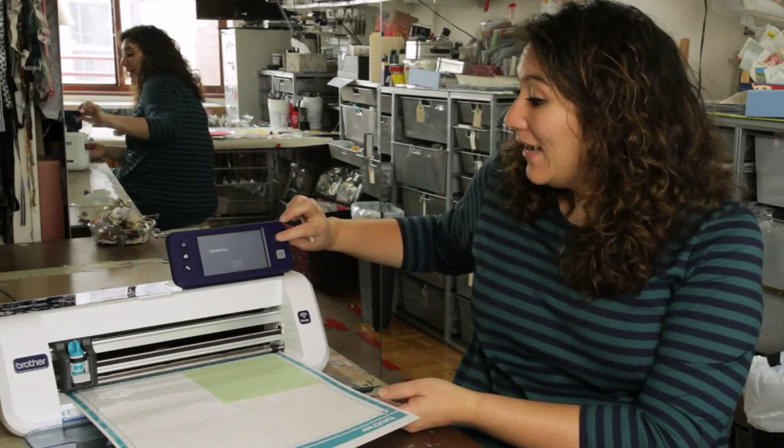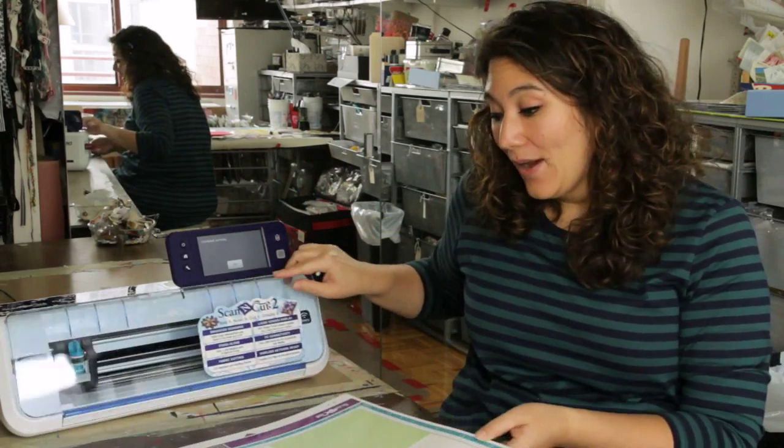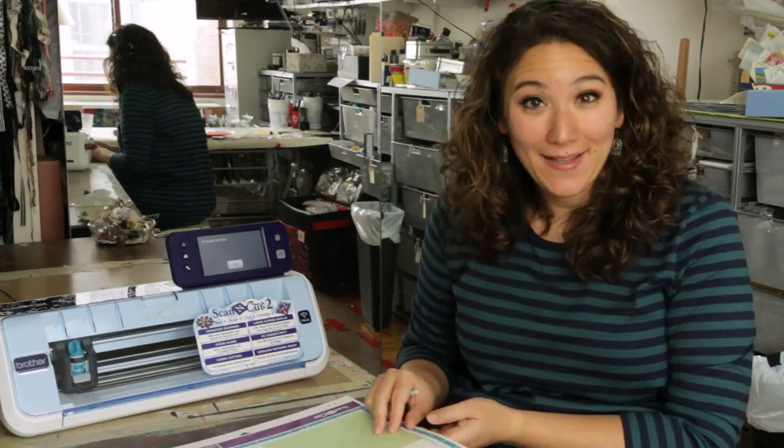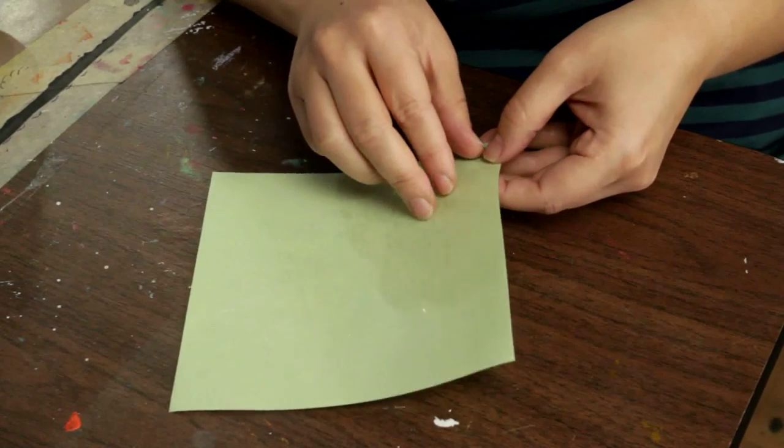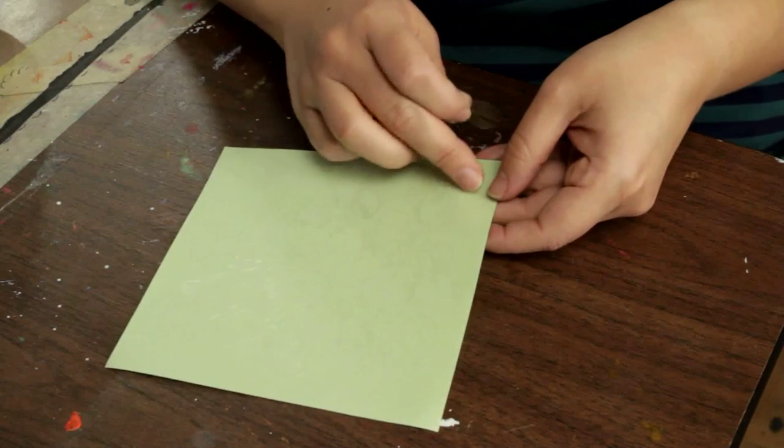So I'm going to unload the mat. Now we need to do a process called weeding. Weeding is where you remove the parts that you don't want from a stencil like this.